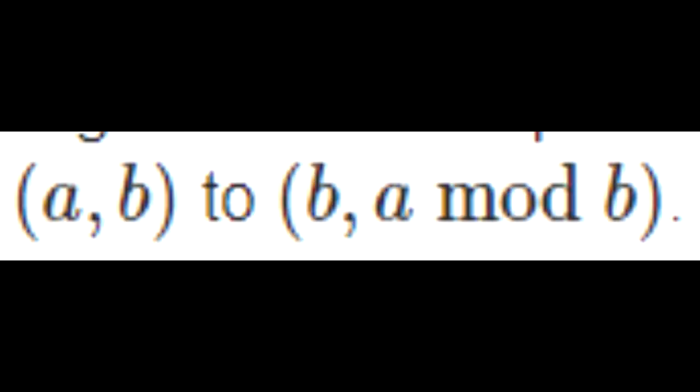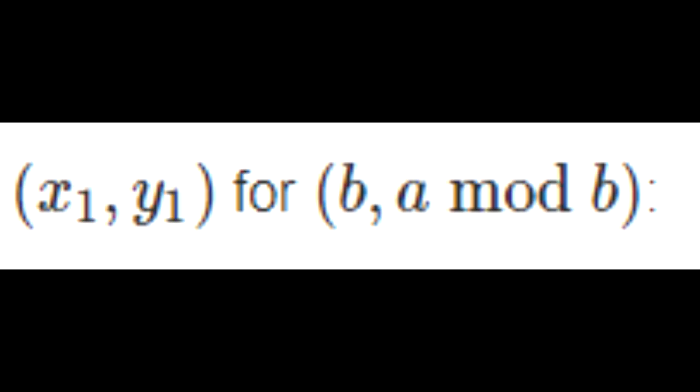So now all we have to worry about is we have to go back up and keep track of how X and Y change whenever we transition from AB to B A mod B, just like the Euclidean algorithm. So let's assume that we already found the new coefficients X1 and Y1 when we transition AB to B A mod B. And let's just substitute that into the equation.